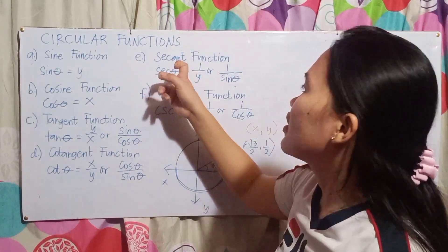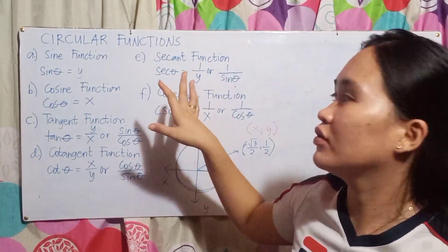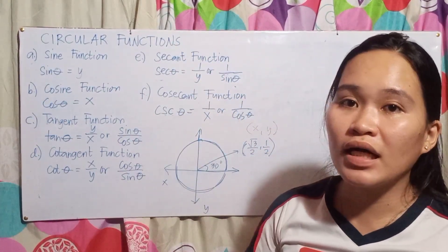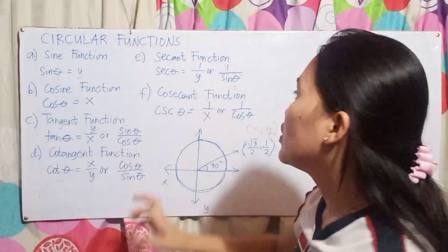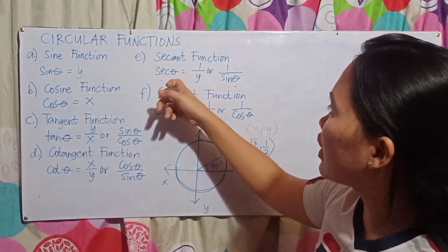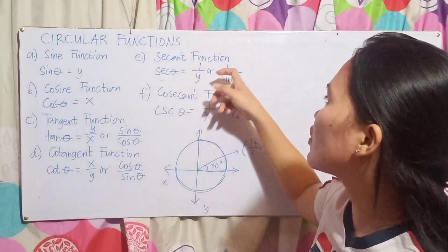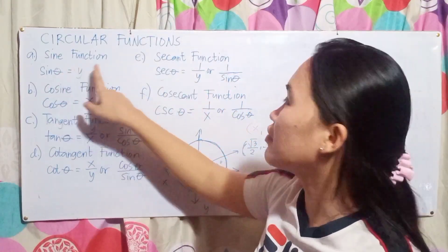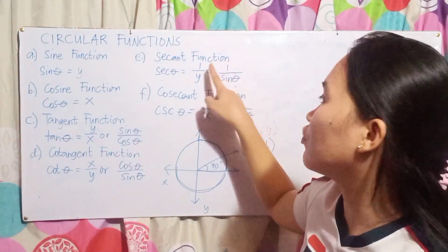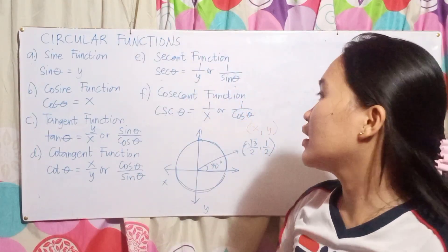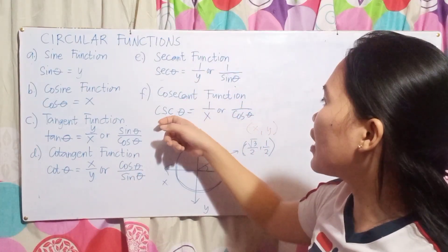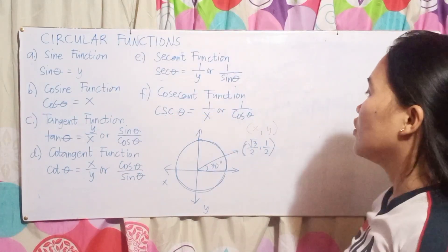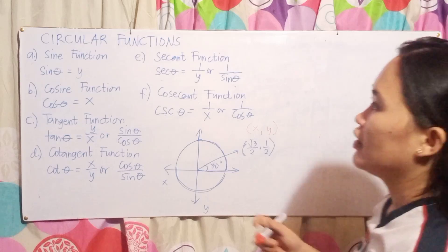Letter E is the secant function. Since secant is not on the calculator, you need to solve it manually. The secant function: sec theta equals 1 over x, or 1 over cos theta.